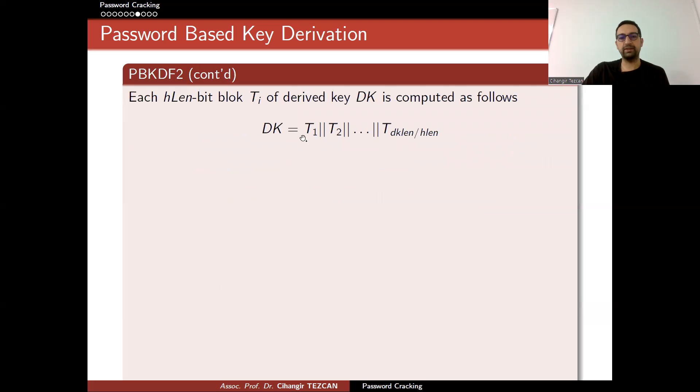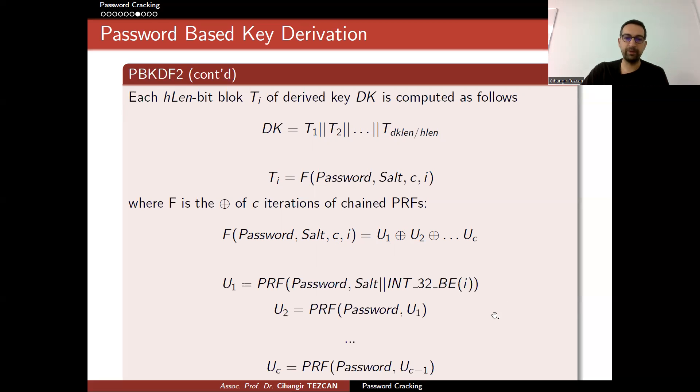It works like this: your derived key is the concatenation of T_i's, and T_i depends on h_len, which is the size of the output of your pseudorandom hash function. Each T_i is generated from F, where it takes input as password, salt, c, and i, where F is the XOR of c iterations of chained pseudorandom functions. Use the hash function many times and XOR the outputs. As you can see, F is the XOR of these outputs c many times. If you choose c larger, then you have to perform more hash function operations.